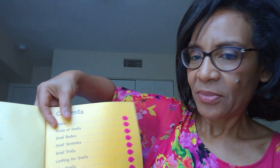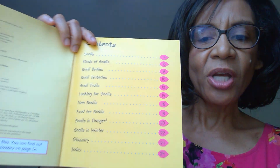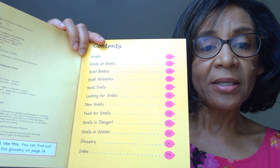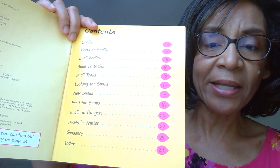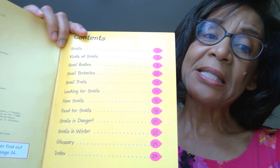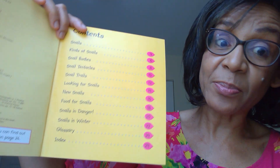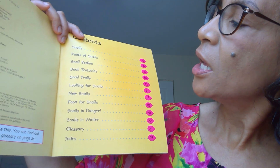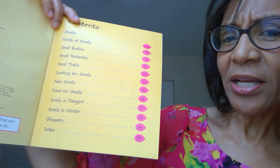All right, so let me point out the table of contents — the table of contents right here. As you know, let me pull it back a little bit — the table of contents is where the topics are listed and the page numbers tell you where you can find them. In some tables of contents these are called chapter titles, as in the case of this book. The chapter titles are: Snails, Kinds of Snails, Snail Bodies, and more.